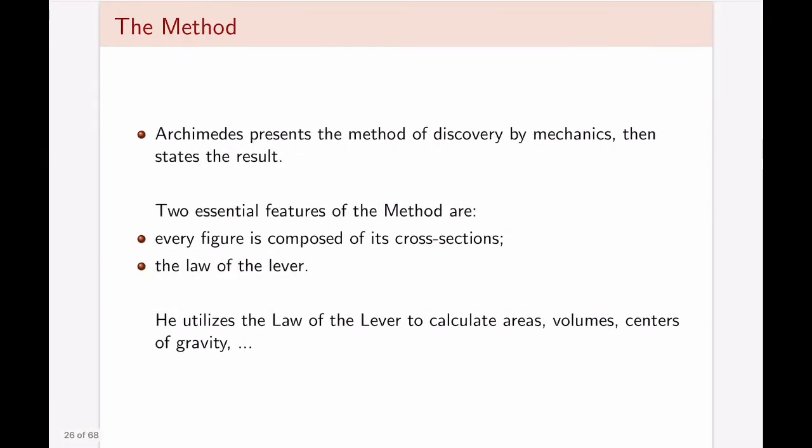In the method, Archimedes presents the discovery by mechanics and then states the result. The two essential features of this is the fact that he thinks of every figure as composed of its cross-sections. So, for example, a cone would be a collection of various circles, much like we think now in terms of methods of volumes of revolution. And the second one is the law of the lever. He utilizes this law of the lever to actually calculate areas, volumes, centers of gravity, and so on. And we will see another video where even laws of statistics can be thought of being developed and justified through the law of the lever.